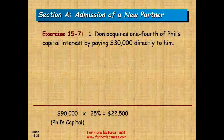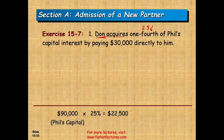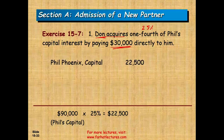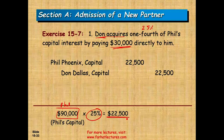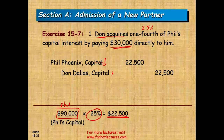In the first scenario, Don acquires 25% of Phil's capital for $30,000 paid directly to Phil. Phil's capital is $90,000, and 25% of that is $22,500. So Phil reduces his capital by $22,500, and Don is admitted with $22,500 in capital. Notice no cash goes to the partnership itself — this transaction happened outside the partnership. Phil took the cash personally.